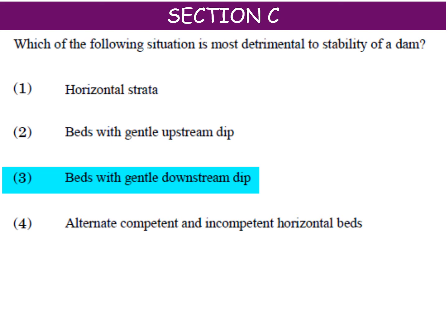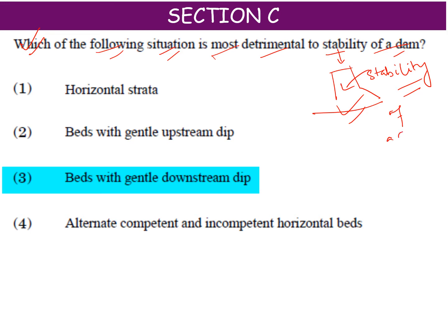The first question is: which of the following situations is most detrimental to the stability of a dam? The stability of a dam means how well the dam can sustain itself over a long duration. To define dam stability, the first option given here is horizontal strata.